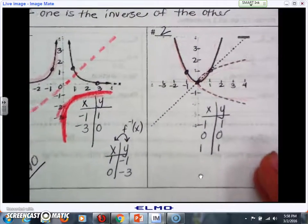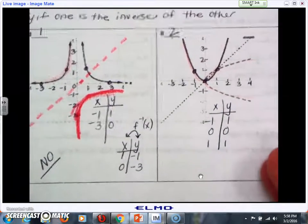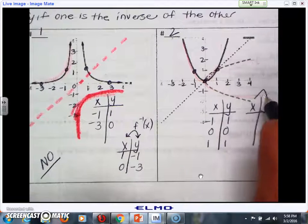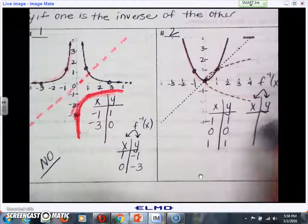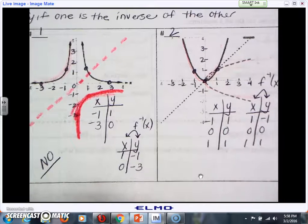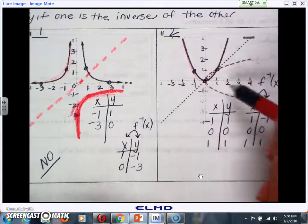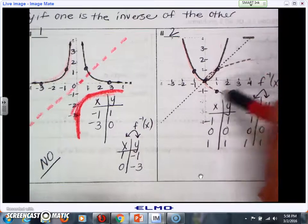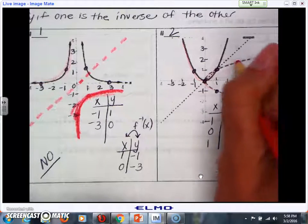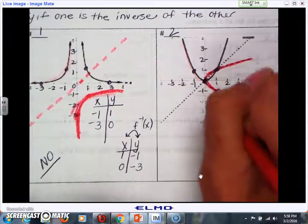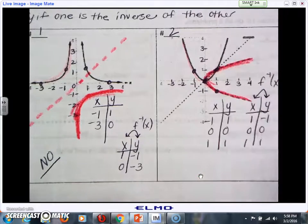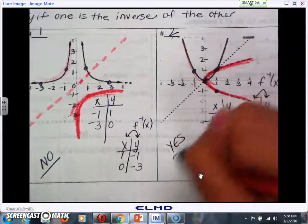If I find the inverse of this function, that means I'm going to flip my table, switch my x and y values. So that means I should have 1, negative 1, 0, 0, and 1, 1. If I plot those points on my graph, I should have 1, negative 1, 0, 0, and 1, 1. These points actually fall exactly on this red point, this red graph. So the correct answer for this one is yes.